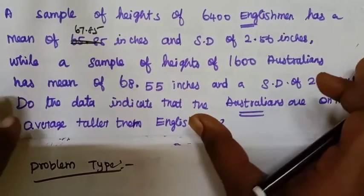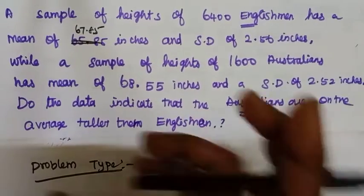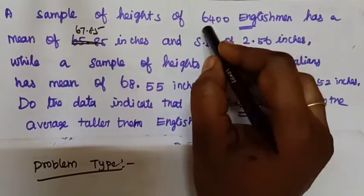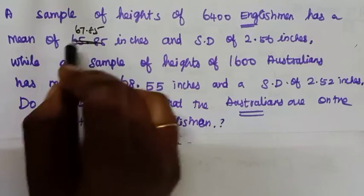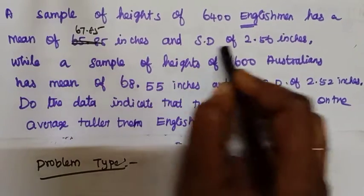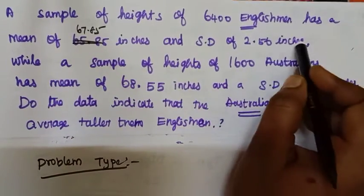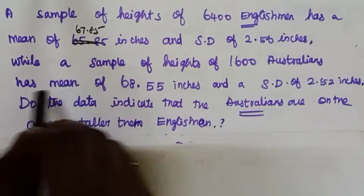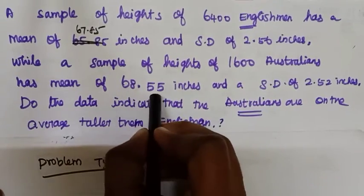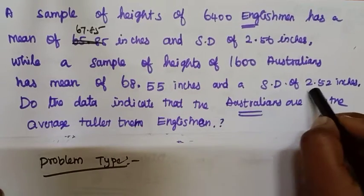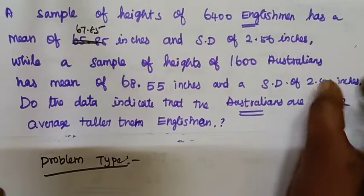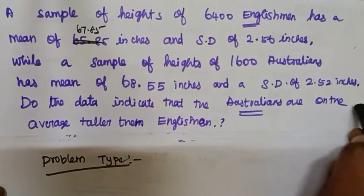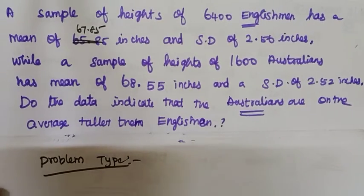Let us see a problem on hypothesis testing. A sample of heights of 6400 Englishmen has a mean of 67.85 inches and a standard deviation of 2.56 inches, while a sample of heights of 1600 Australians has a mean of 68.55 inches and a standard deviation of 2.52 inches. Do the data indicate that Australians are on the average taller than Englishmen?